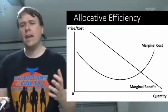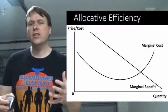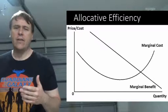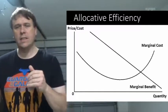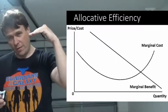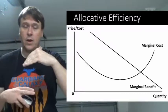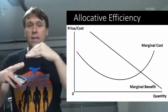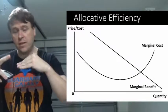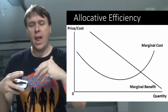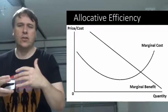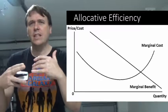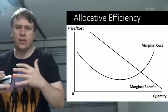So for allocative efficiency to be achieved, you need to have your marginal cost equals to your marginal benefit. So in a sense that, as your marginal benefits are falling and your marginal costs are increasing, then once your marginal cost is greater than your marginal benefit, then it's not worth producing anymore. In a sense that the cost of that production is actually outweighing the benefit of that additional production.